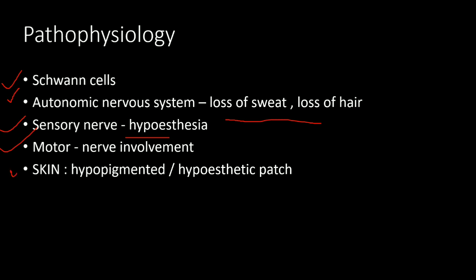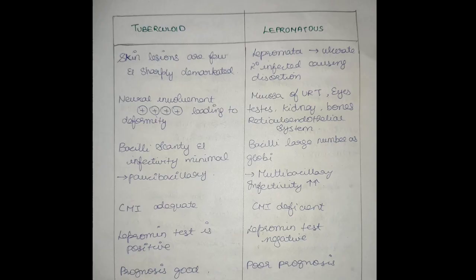Looking at skin involvement, typically the lesions are hypopigmented and hypoesthetic patches. If you look at the patch in tuberculoid type, there is a single one. Now let's see the clinical features.